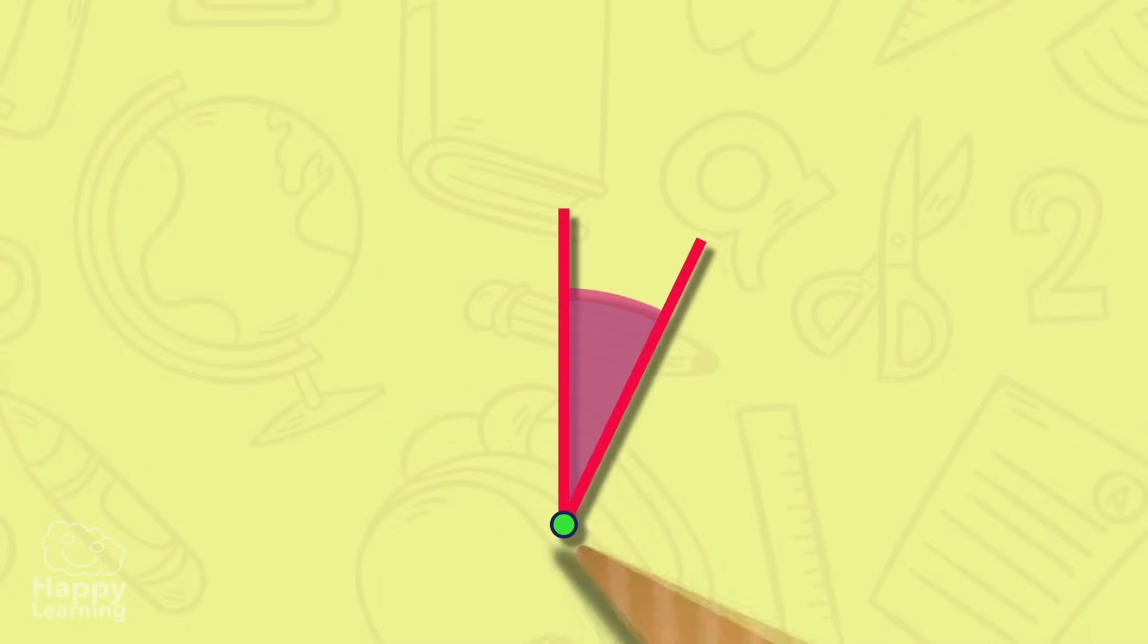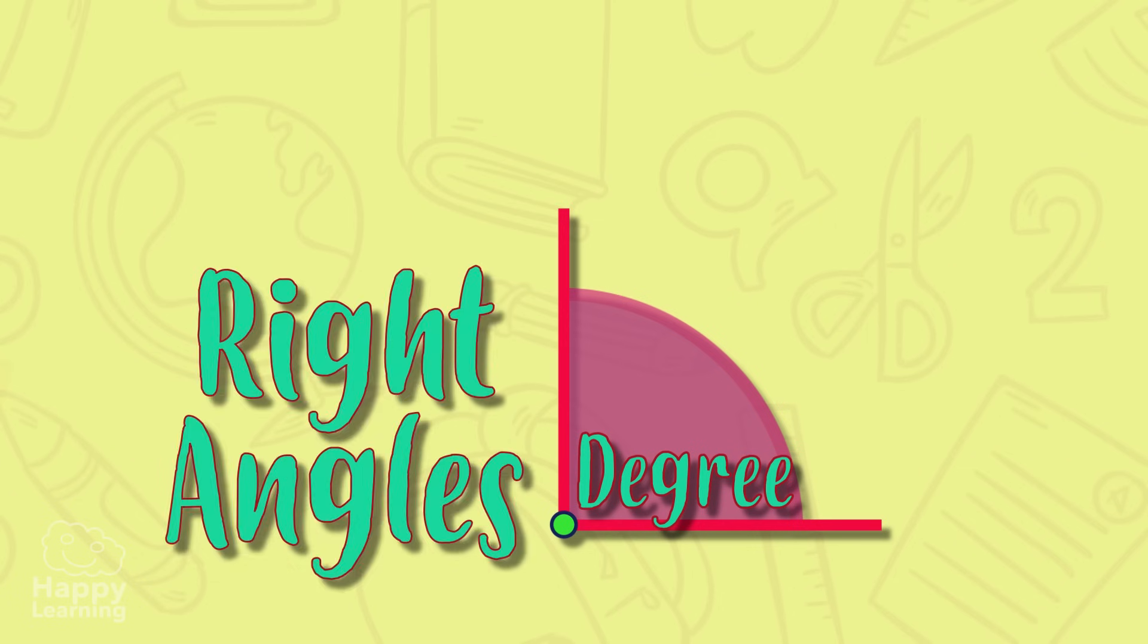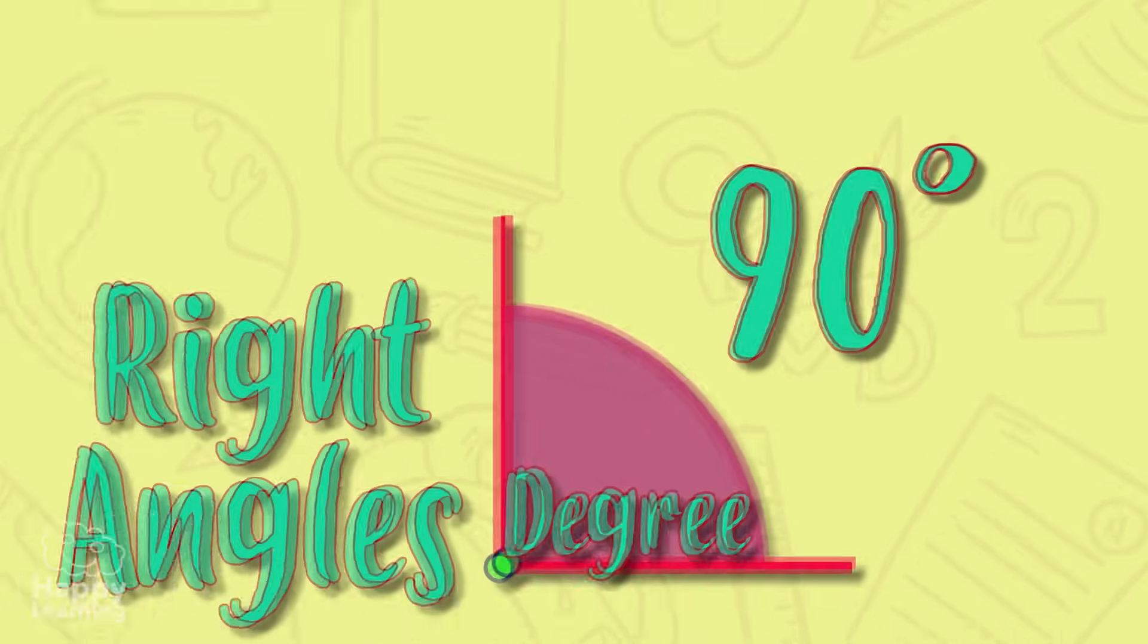The unit of measure of the angles is the degree and the most important angle of all is this one. It's called a right angle and it measures 90 degrees. The tiny zero you can see in the right upper part of the number 90 is a symbol that represents all angles. We say that a right angle is the most important one because it is the one that is used to compare all of the other angles.